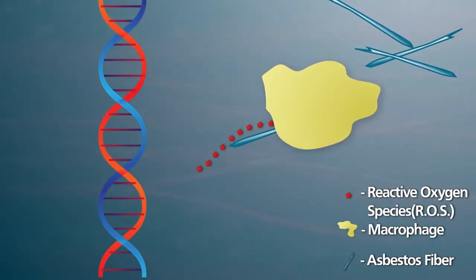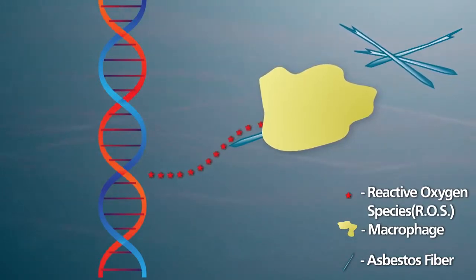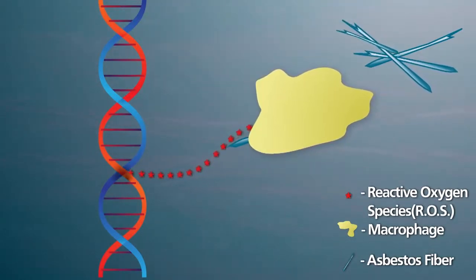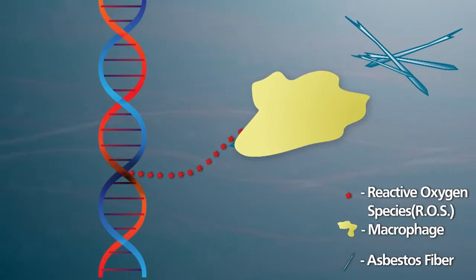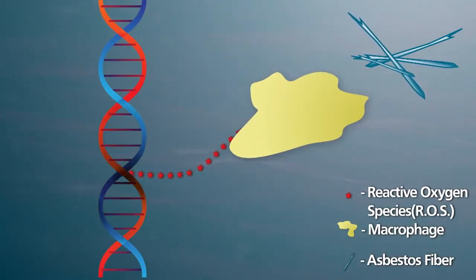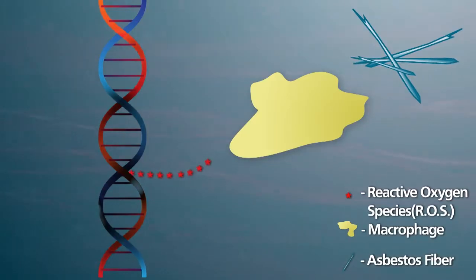This causes the fibers to build up over time. The chemical reactions that occur during this process result in compounds like reactive oxygen species, which damage DNA and lead to scar tissue or fluid buildup.